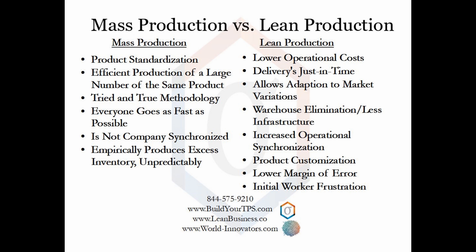Mass production is an efficient way of producing a large quantity of the same thing. It is a tried and true methodology. Everyone in the company goes as fast as possible. Mass production is not synchronized and produces lots of inventory in unpredictable places. Lean production lowers costs in two significant areas. One, it significantly lowers inventory because you make one product at a time based on a customer order.